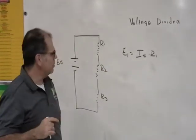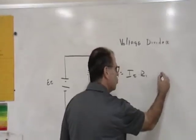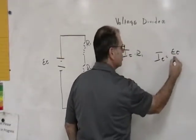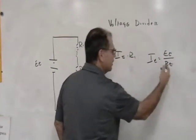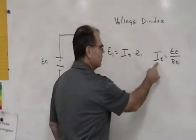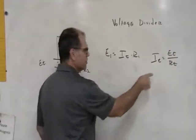The other thing that we know is what the value of IT is or what IT is actually known for. It's the voltage total divided by total resistance. So again, the total current is equal to the total voltage divided by the total resistance.